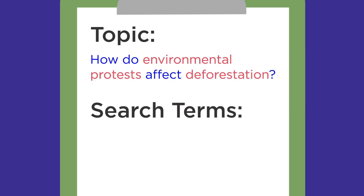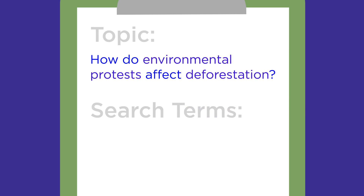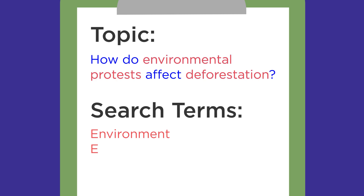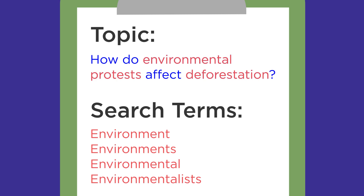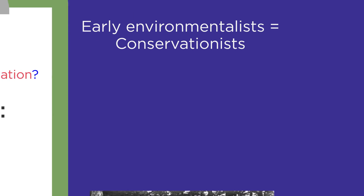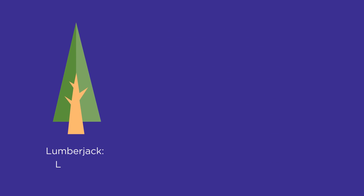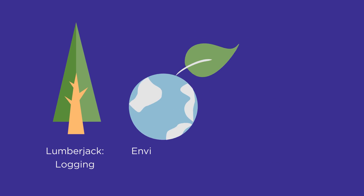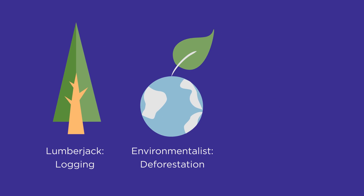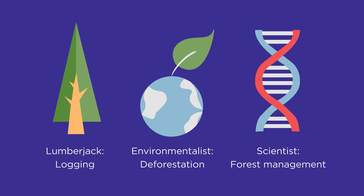Let's discuss a few ways to brainstorm search terms, keeping our example topic sentence in mind. First, brainstorm different forms and spellings of your main idea words. Consider the time period that you're studying and how it might impact your terms. For example, early environmentalists were known as conservationists. Think about how different people in different positions might represent your topic and terms. For example, a lumberjack might refer to 'logging,' while an environmentalist might use 'deforestation,' and a scientist might refer to 'forest management.'